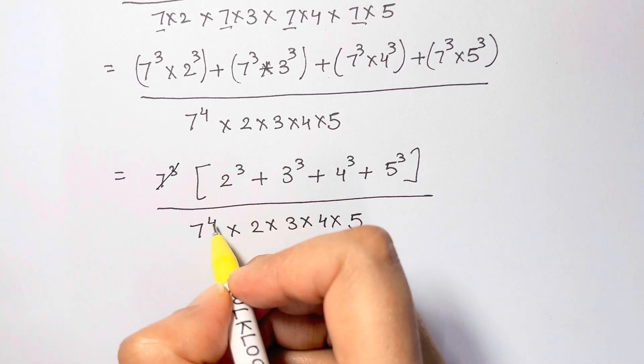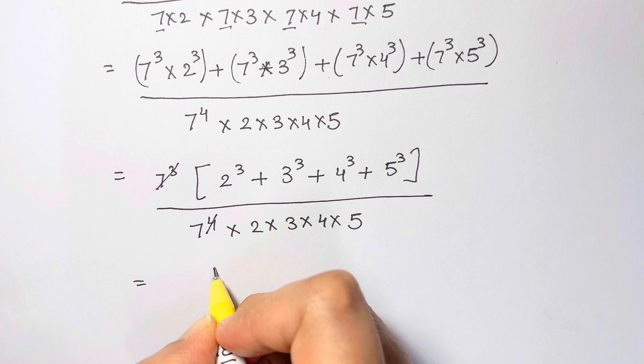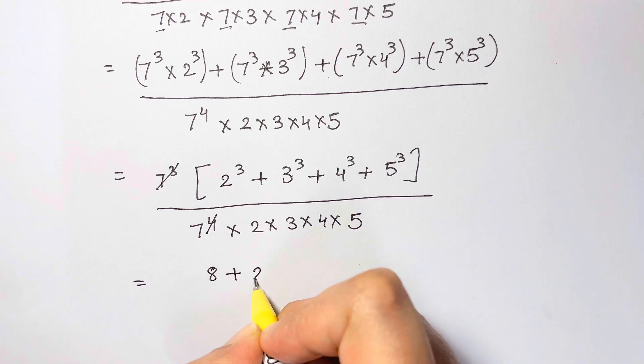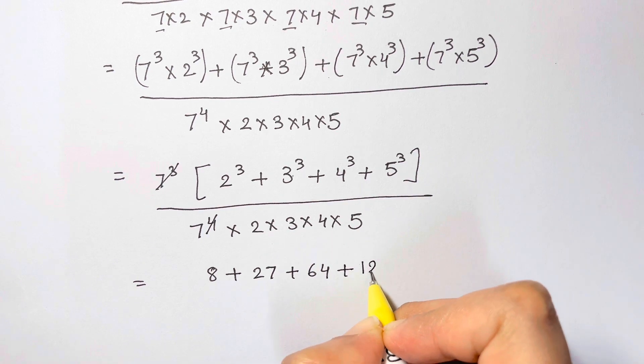Now, if you can see, you can cancel out 7 cube with this, so I'm left with 1 over 7. So here I have 2 cube is 8, 3 cube is 27, 4 cube is 64, 5 cube is 125.